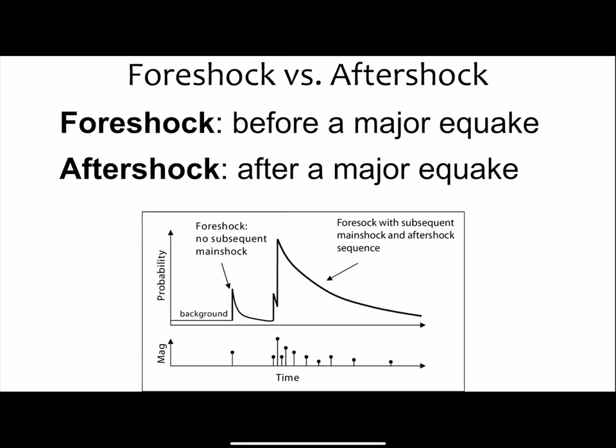Seismographs show us that earthquakes rarely occur in just a single pulse. Often, earthquakes are preceded by a foreshock, which is a small quake occurring before a larger main shock. After this main shock, smaller quakes known as aftershocks, with gradually diminishing strength, can still affect people. These aftershocks can continue days after the main earthquake.